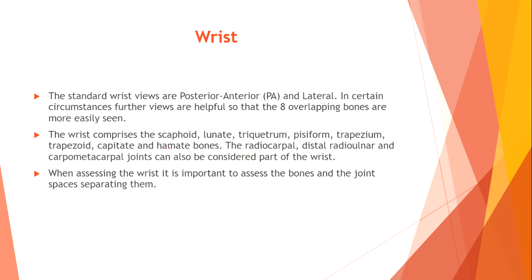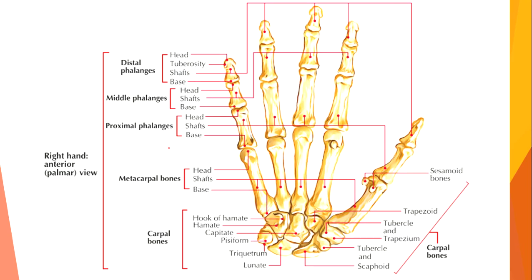Wrist. The standard wrist views are posterior-anterior and lateral. In certain circumstances further views are helpful so that the eight overlapping bones are more easily seen. The wrist comprises the scaphoid, lunate, triquetrum, pisiform, trapezium, trapezoid, capitate, and hamate bones. The radiocarpal, distal radial ulnar, and carpometacarpal joints can also be considered part of the wrist. When assessing the wrist, it is important to assess the bones and the joint spaces separating them.